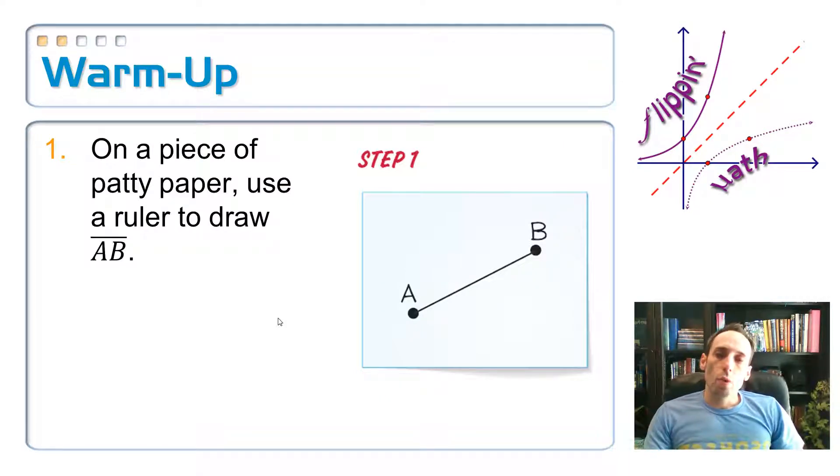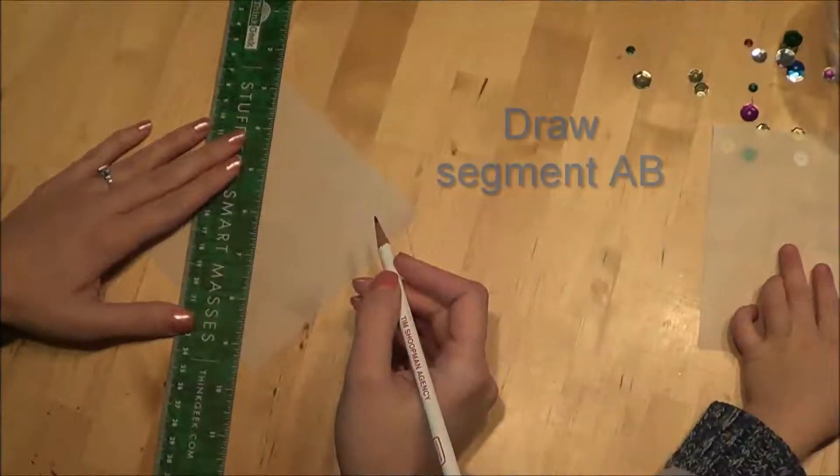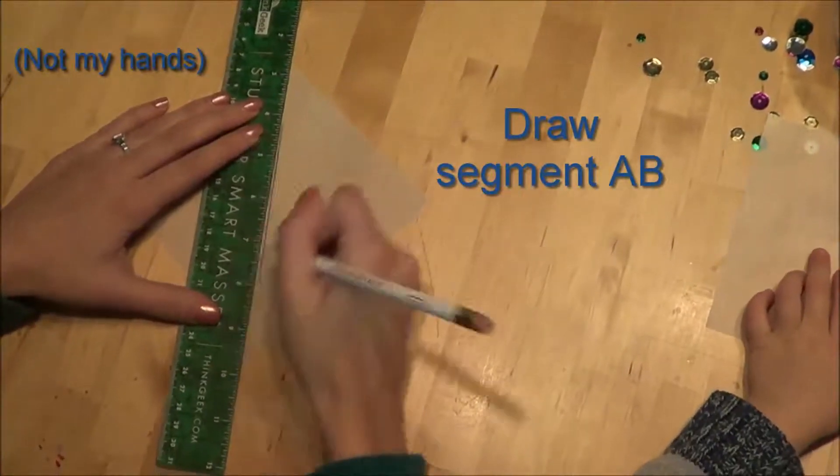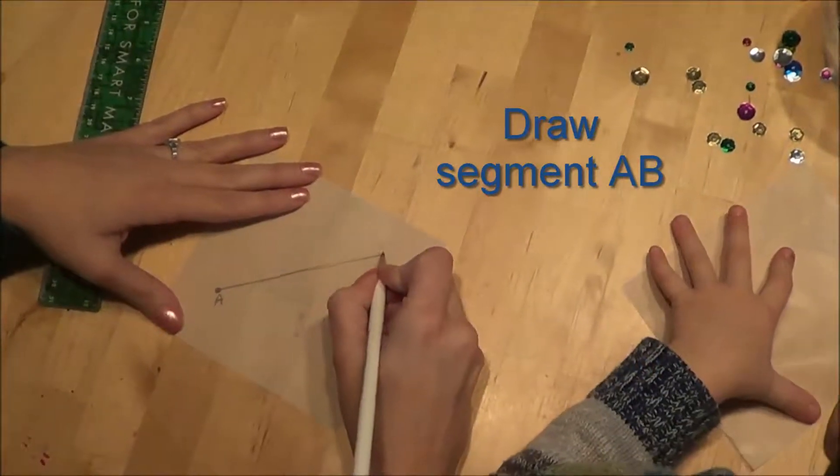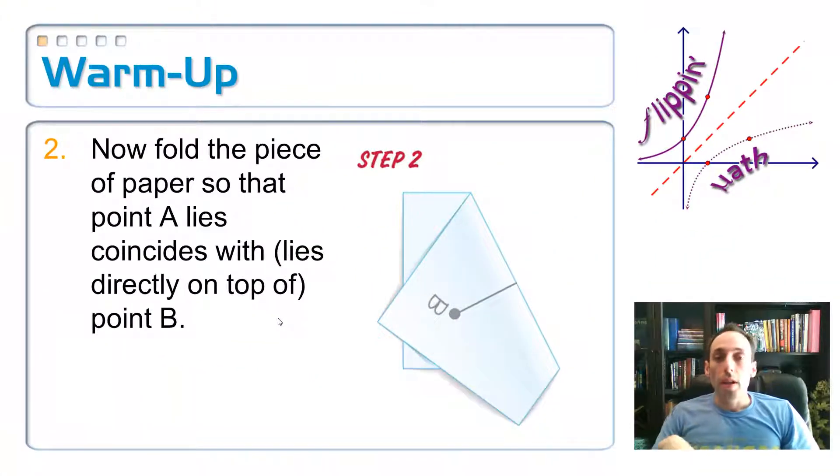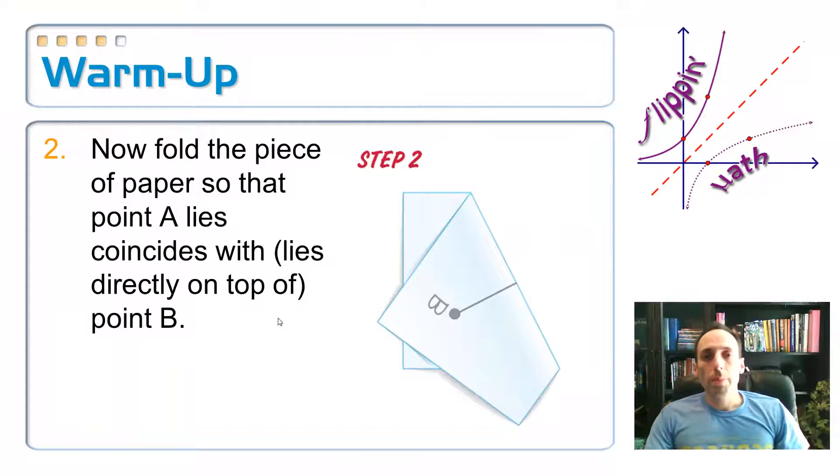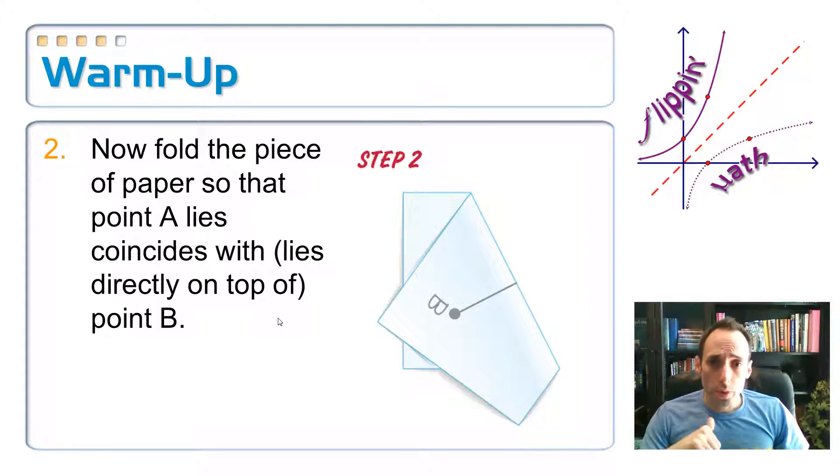This first warm-up I'm going to show you or remind you how to do this little construction on patty paper. Maybe you did something like this in geometry. I'm going to take a piece of patty paper and draw myself a segment on it, segment AB. The next step is you're going to fold that piece of patty paper so that point A and point B lay right on top of each other, so they coincide, and then go ahead and make that crease.